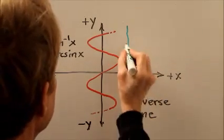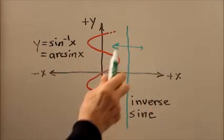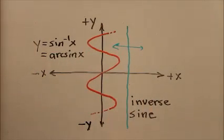Here's the vertical line, which you can imagine just sweeping back and forth across this red curve, which represents the inverse sine relation.